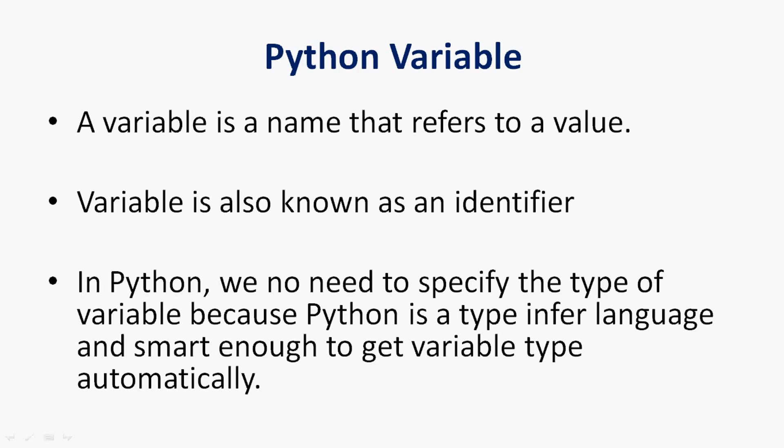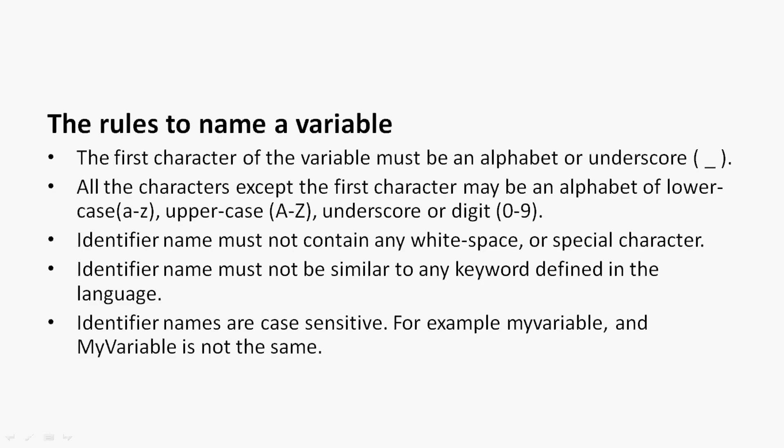Coming back to Python variables — a variable is a name that refers to a value. A variable is also known as an identifier. In Python, we do not need to specify the type of a variable because Python is a type-inferred language, smart enough to get the variable type automatically.